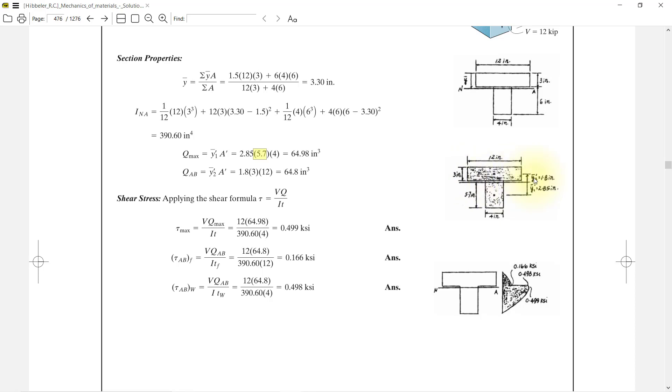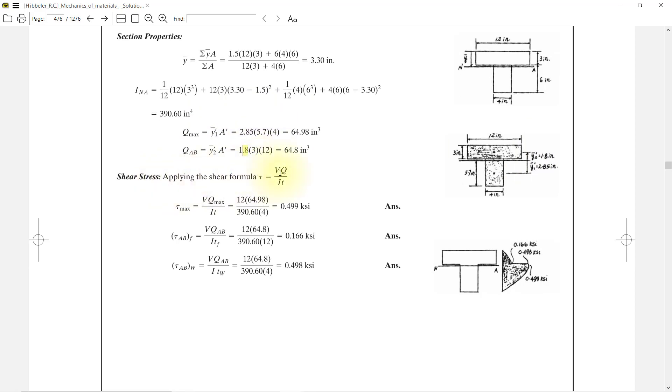Now our stress intensity, τ = VQ/(It). First we will put our maximum stress: 12 multiply by 64.98 divided by our I value, and t value is 4 inch. We got 0.5 ksi.